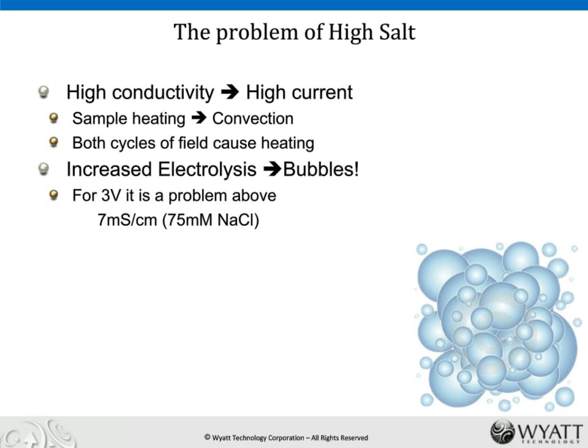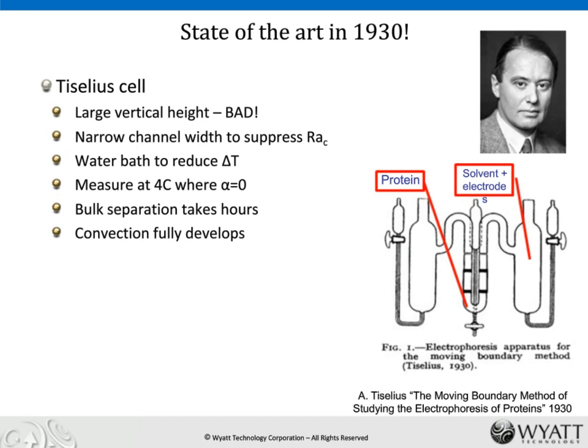The state of the art in 1930, when Arne Tiselius did the very first mobility measurements of proteins — work for which he won the Nobel Prize — used a cell with large reservoirs on either side to keep electrodes far from the measurement zone, applying a big voltage to get net migration and separation of proteins into bands. This worked because the electrodes were far away, but he still had convection problems and had to put the entire instrument in a temperature-controlled bath at 4°C to make thermal expansion go to zero.